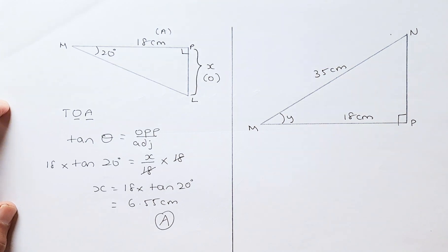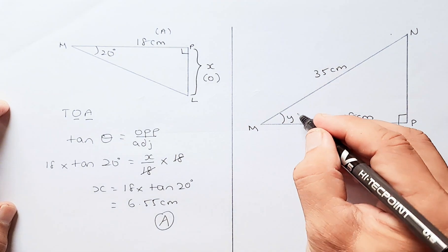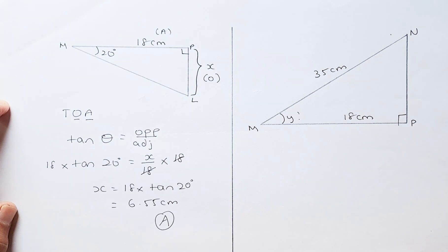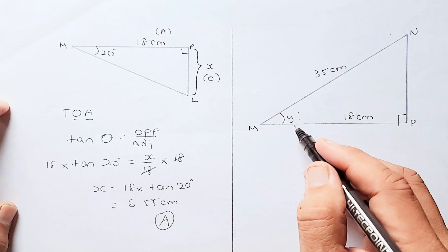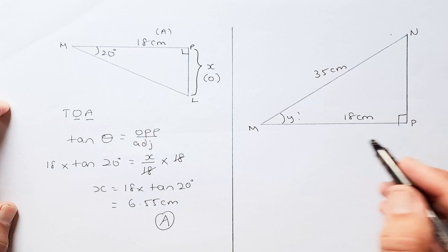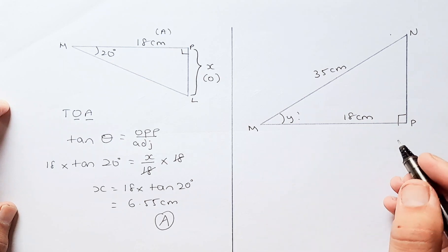The second question is also an achieve question. So you need to find angle Y. You are given, you need to find angle Y, and MN is 35 and MP is 18. So what you do,